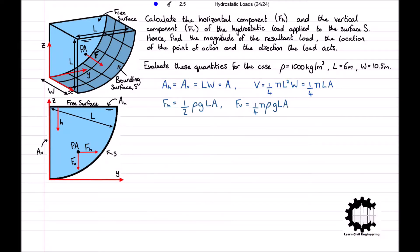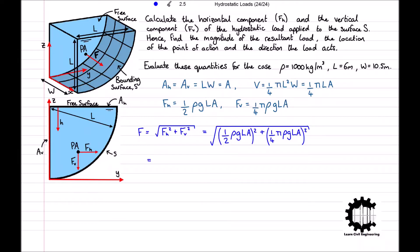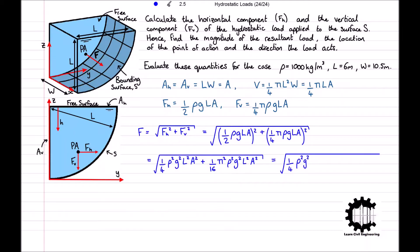To calculate the magnitude of the resultant load we find the hypotenuse of the horizontal and vertical components using Pythagoras's theorem. So F equals the square root of FH squared plus FV squared, which equals the square root of one half rho G LA all squared plus one quarter pi rho G LA all squared. Expanding and factoring out one quarter rho squared G squared L squared A squared gives F equals one half rho G LA times the square root of one plus pi squared over four.